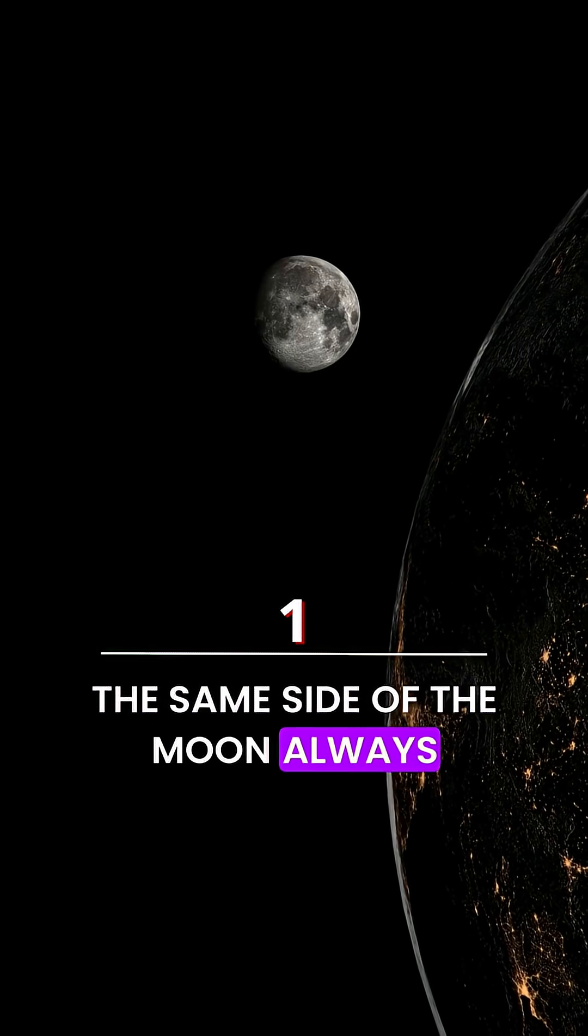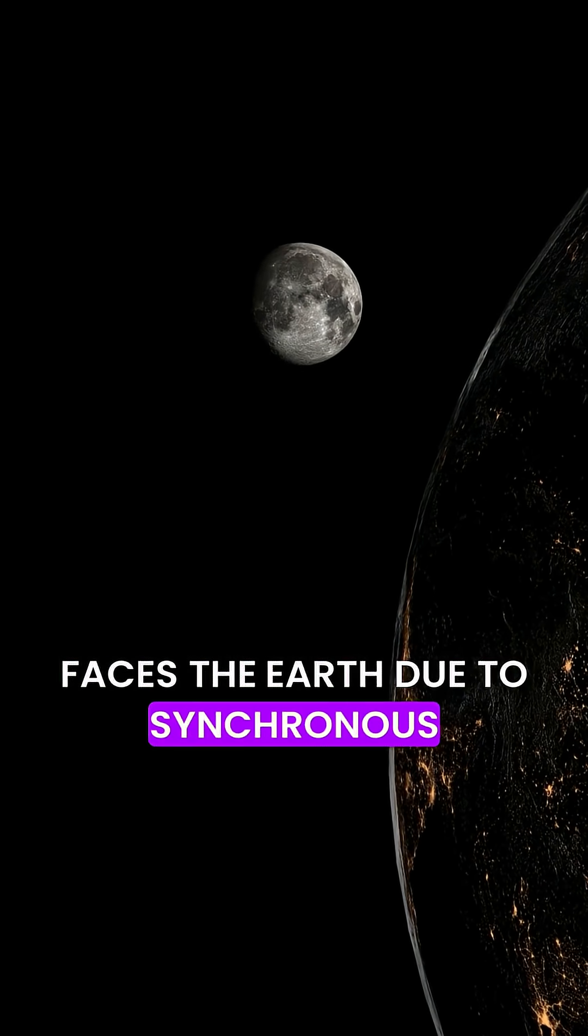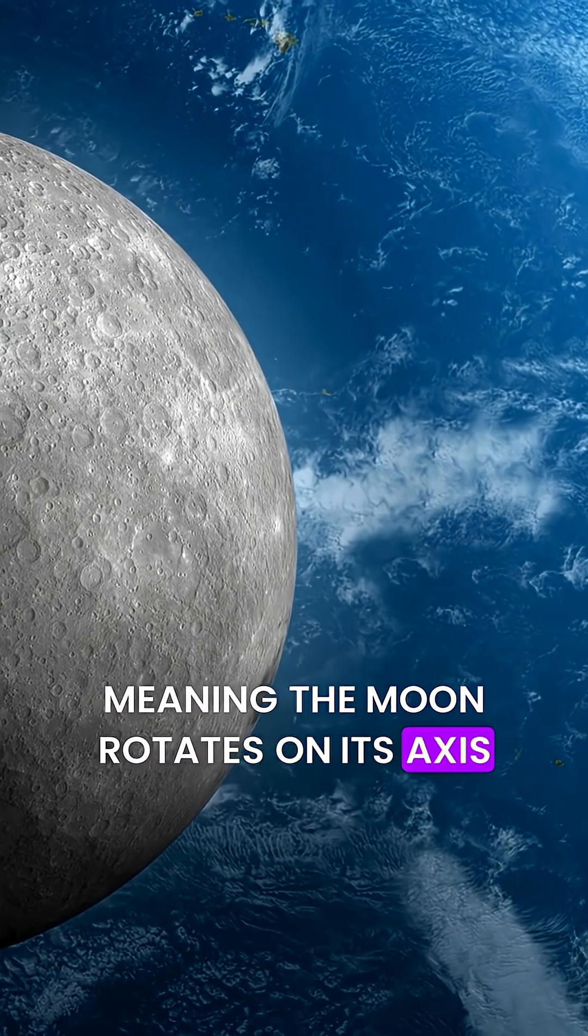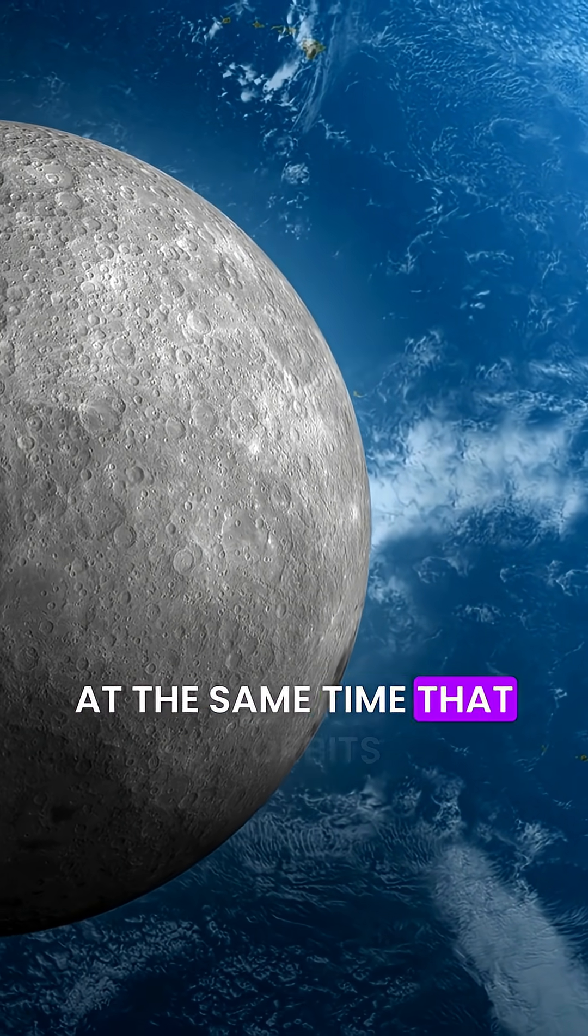The same side of the Moon always faces the Earth due to synchronous rotation, meaning the Moon rotates on its axis at the same time that it orbits Earth.